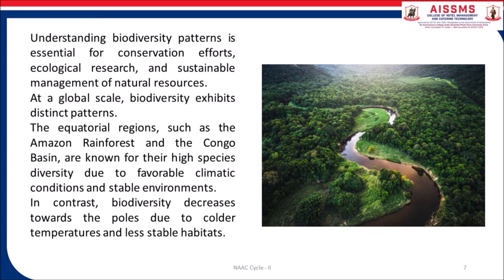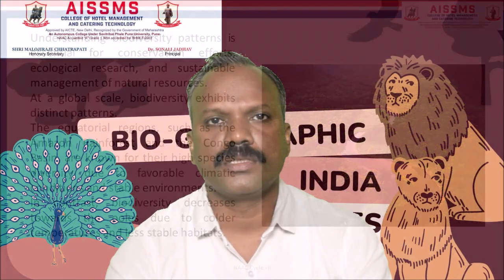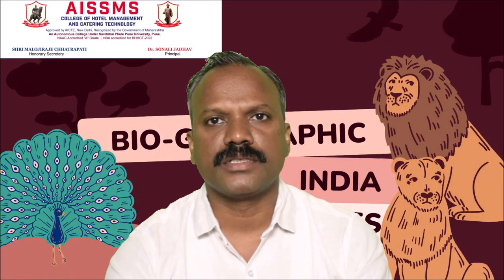At a global scale, biodiversity exhibits distinct patterns. The equatorial regions such as the Amazon rainforest and the Congo Basin are known for their high species diversity due to favorable climatic conditions and stable environments. In contrast, biodiversity decreases towards the poles due to colder temperatures and less stable habitats.